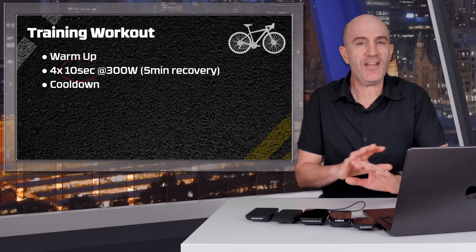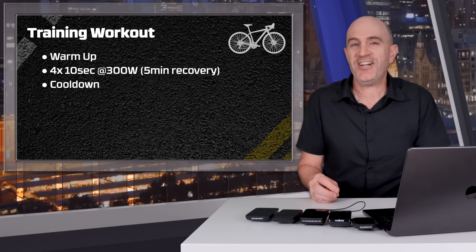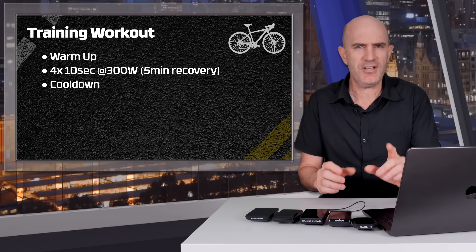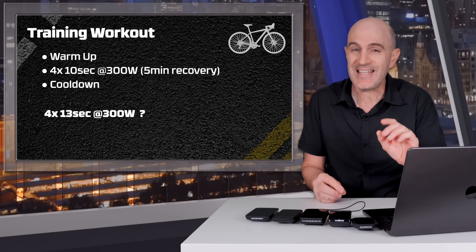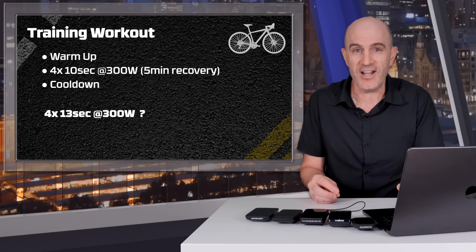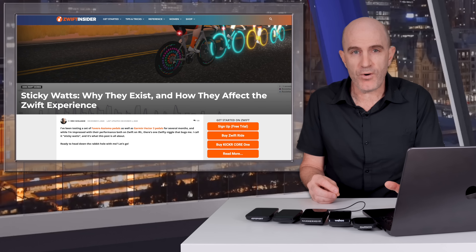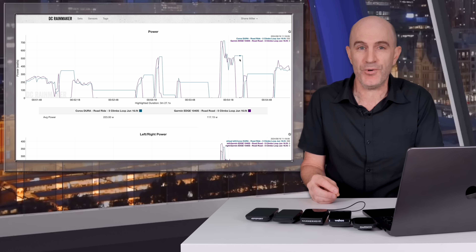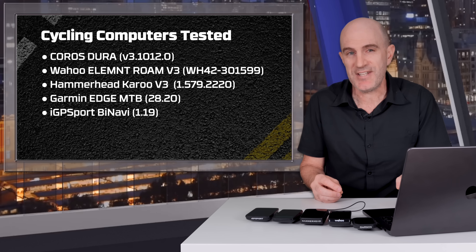Now change 10 minutes to 10 seconds — leave everything else the same. Your training session is now four by 10 seconds. You've got that trusted power meter on the bike, you go and get that session done. But your data shows that you've done four by 13-second intervals — but you didn't. This is the scenario that is happening with some bike computers, and this is a problem. It's an even bigger problem for longer rides. The topic of sticky watts is not new. It has existed in a few forms for a while, and it's something the Coros Dura was doing with the SRAM Quark Power Meter when the Dura was first launched.